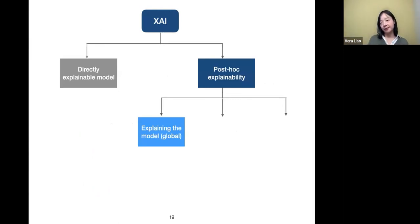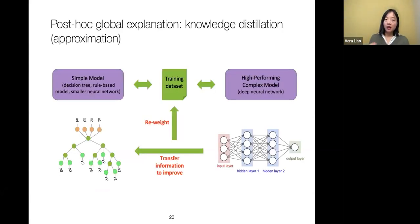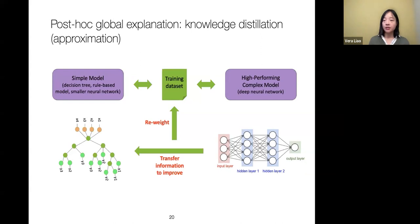Considering post-hoc explainability, there are three kinds of explanation these algorithms can generate. The first is called global explanation, which tries to give an overview of the model — how it works, what rules it follows, what features it generally considers important. Many of these algorithms do what's called knowledge distillation or approximation: you have a complex model whose logic isn't directly explainable, so the algorithm trains a simpler model like a rule-based model or decision tree to approximate the complex model's decisions.